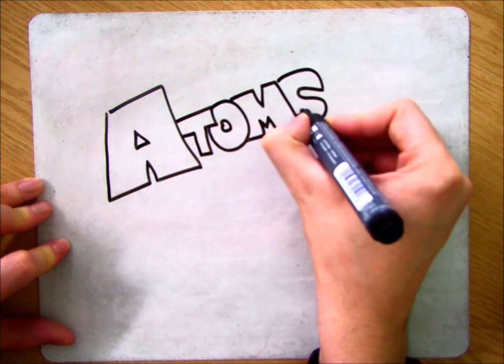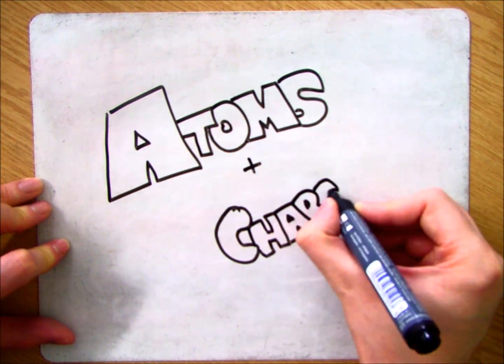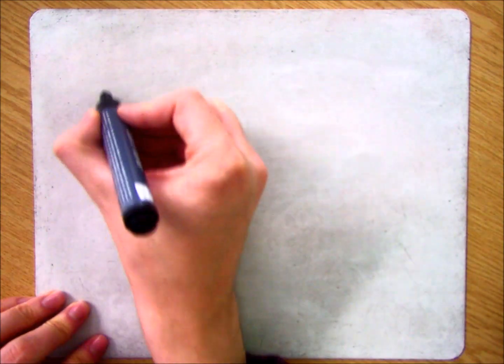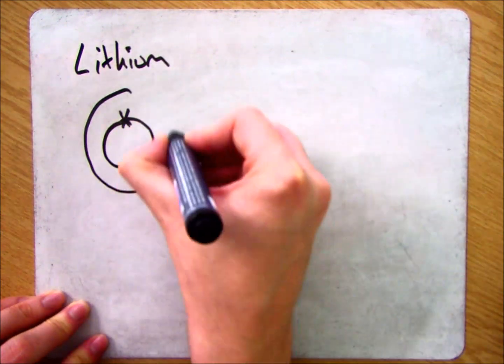This video is going to focus on why atoms have equal numbers of protons and electrons. So if we were to draw an atom of lithium, for example,